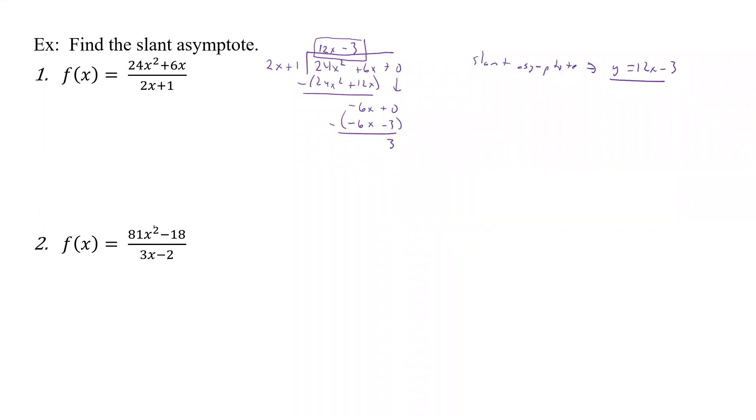Same thing works on the second one here. We take our 3x minus 2 into, now we have 81x squared plus 0x. Remember you have to fill in all the spaces that are missing, and then minus 18.